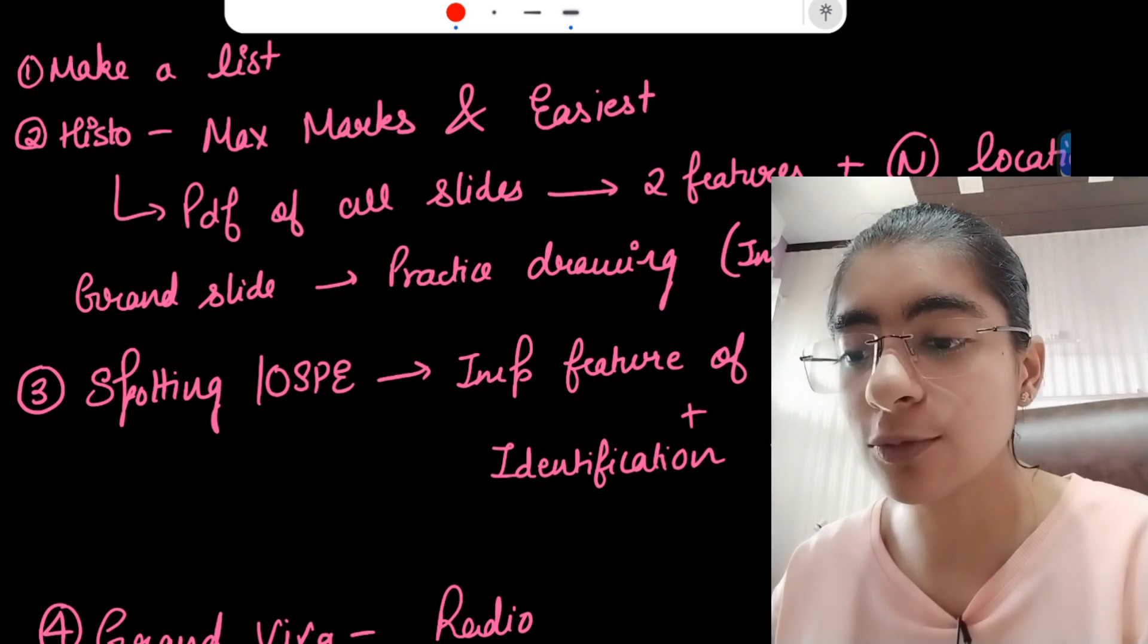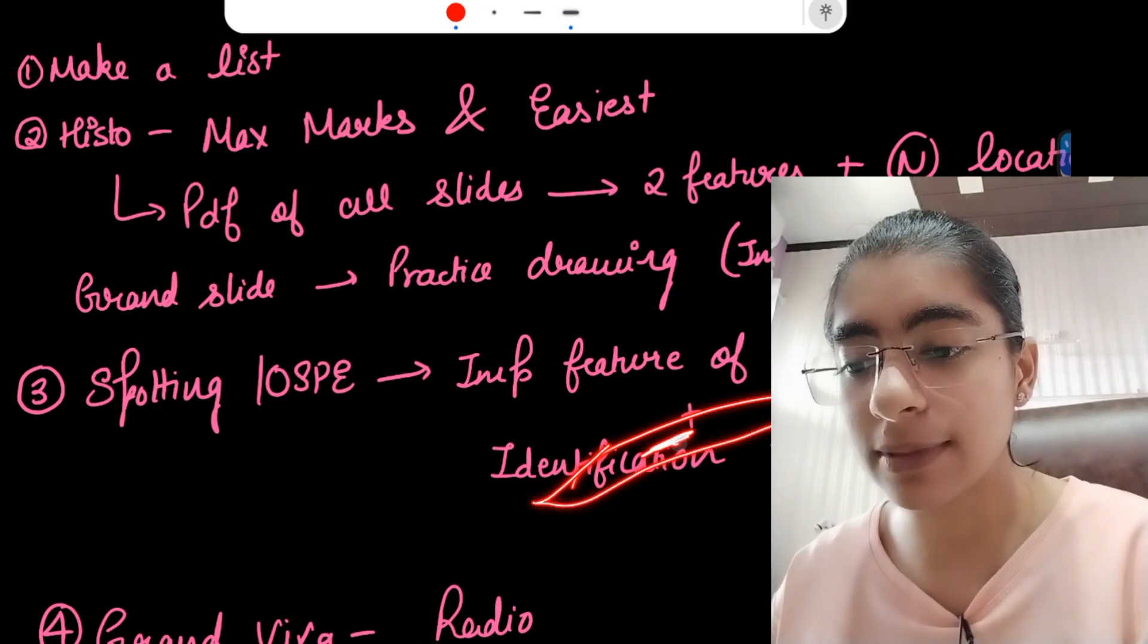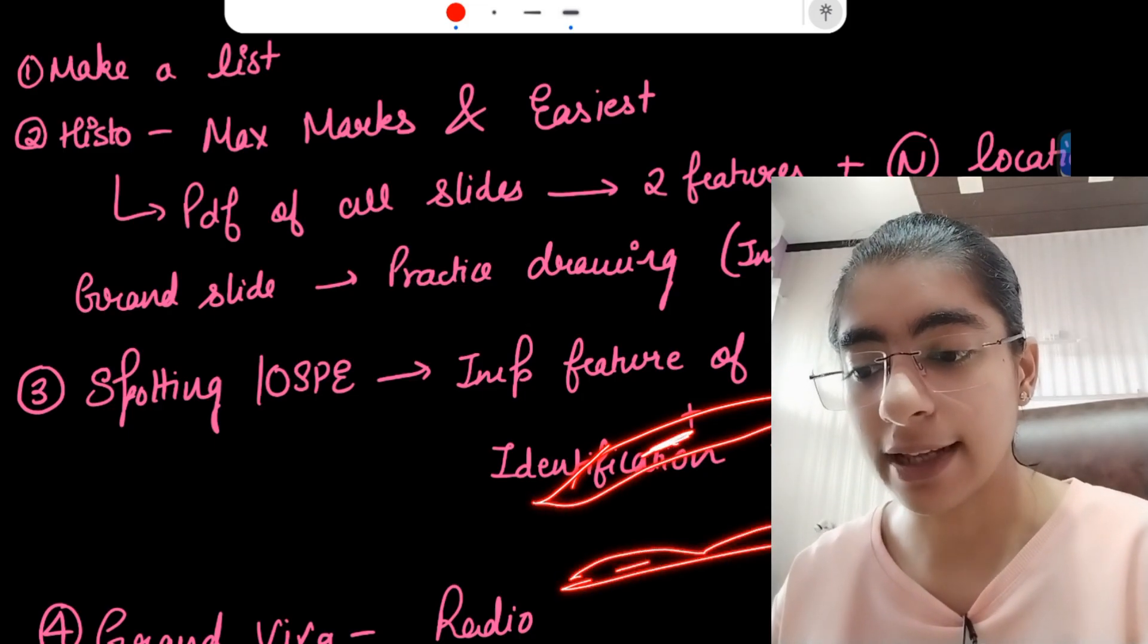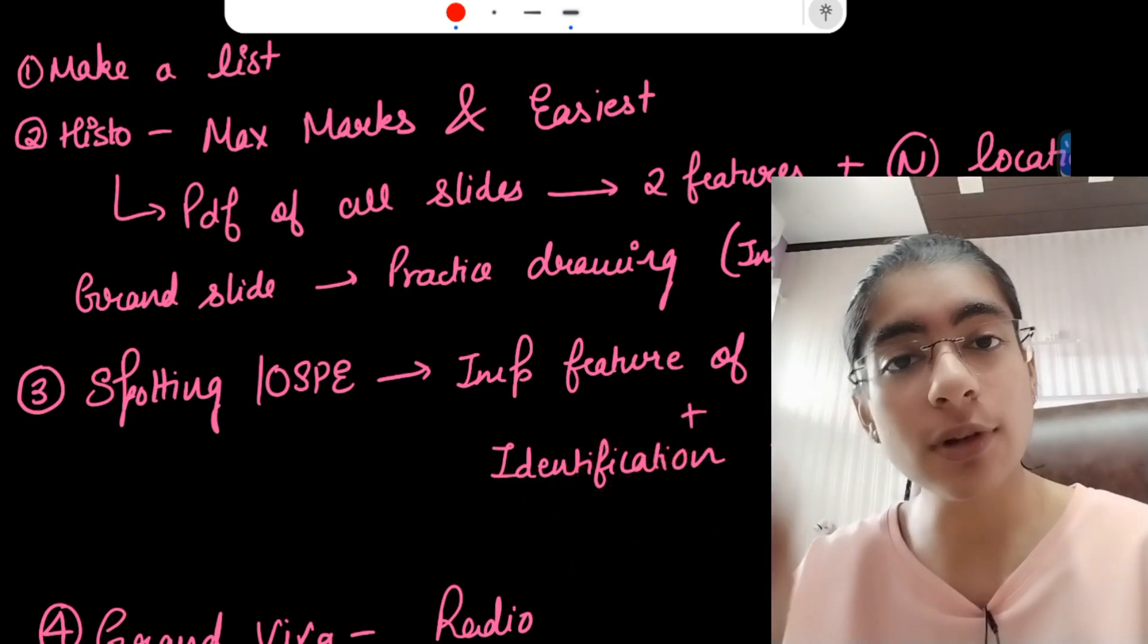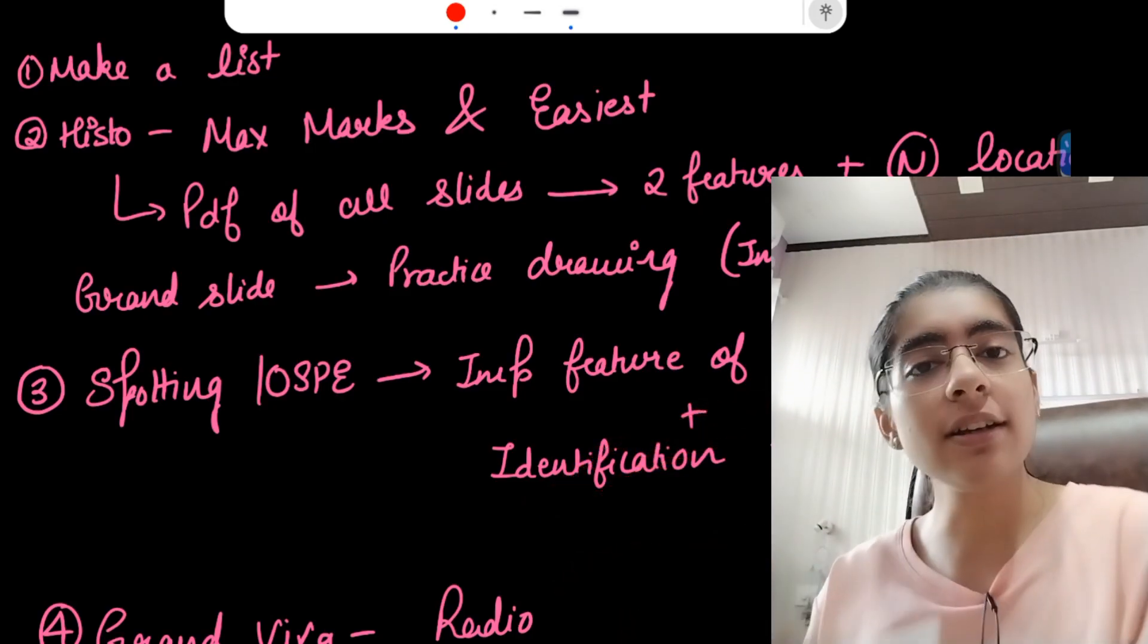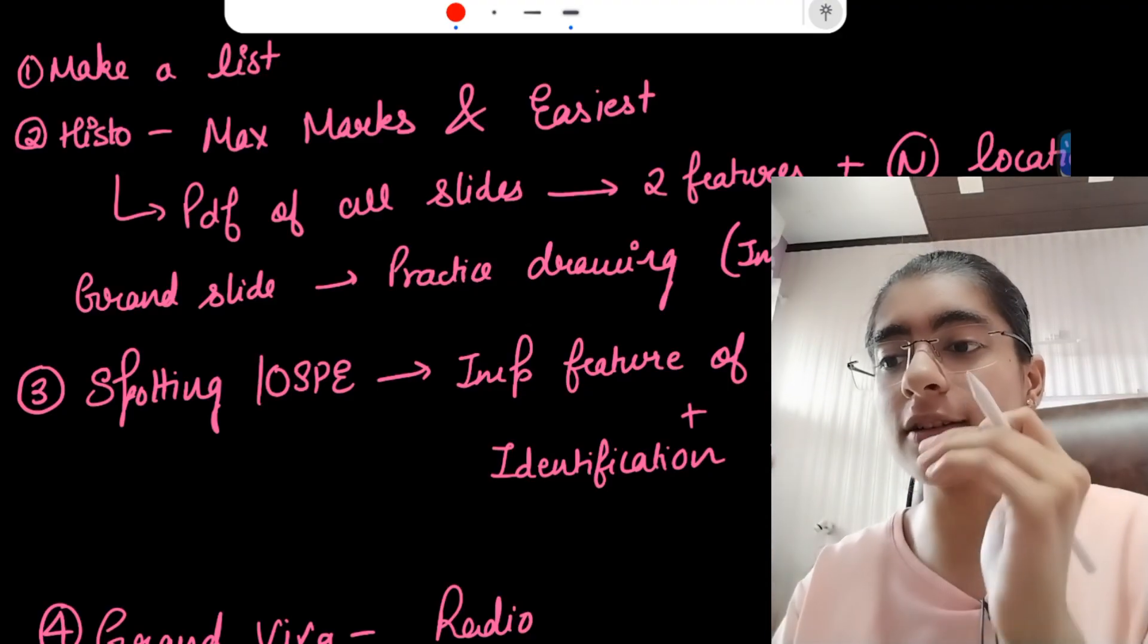If you know how to draw smooth muscle, then you can draw it. If you know how to draw squamous epithelium, then you can draw it. Similarly for cuboidal and all other epitheliums. If you know how to draw each and every point, then you can easily make the whole diagram if you know the important features of every slide.